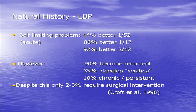Within the natural history, in an acute episode it is self-limiting — it will get better. 92% of people will get better within a two-month period, even if nobody puts their hands on them and they just self-manage. However, 90% become recurrent. 35% will develop the umbrella term of sciatica, and 10% will go on to have persistent back pain. Despite that, only 2–3% require surgical interventions. That's a massive 85% chunk of people who are going to have recurrent back pain that don't need any surgery — so that's a big conservative management issue.